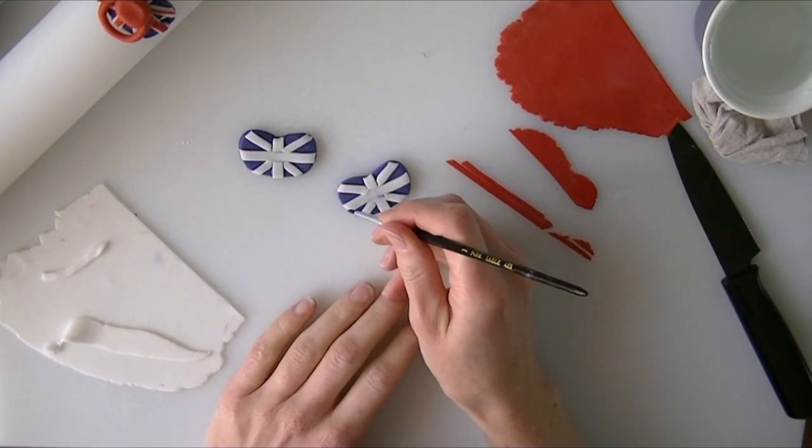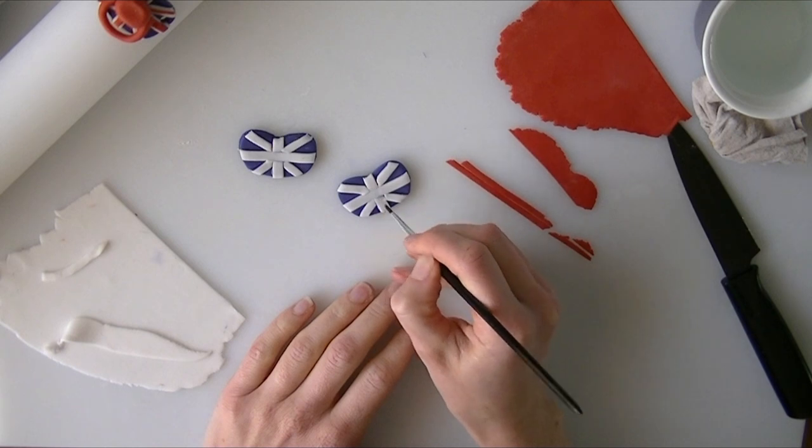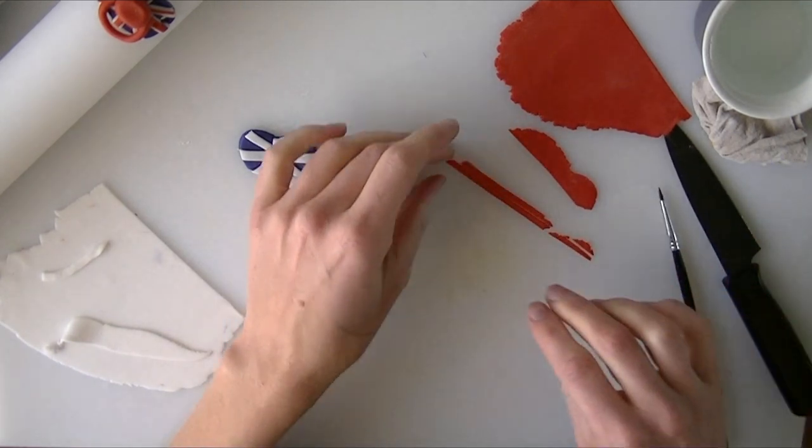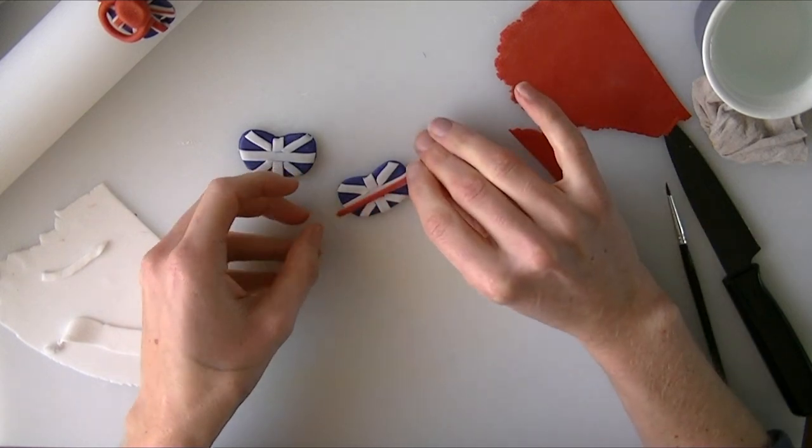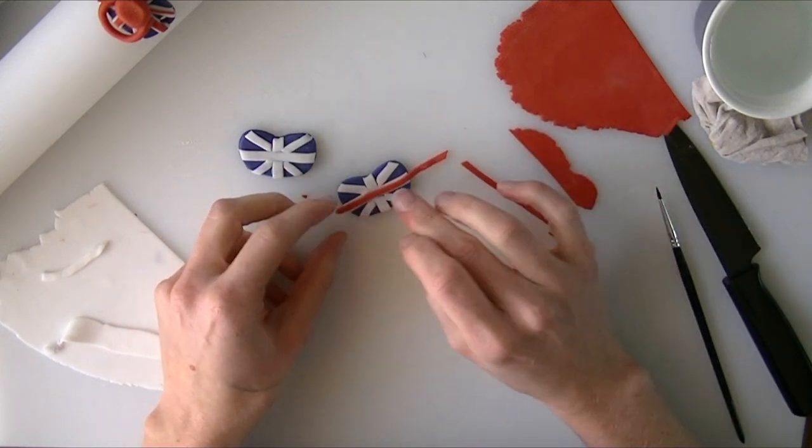Again, we're going to put a little bit of water down the center of our white cross. We're going to put our red fondant across the middle so you can see some white at either side. I'll just push that on.